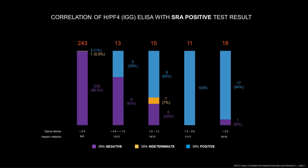Here is shown the correlation of the Mayo Clinic serotonin release assay with optical density of the heparin platelet factor IV IgG ELISA assay. The large majority of patients with a high optical density above 1.5 had a positive serotonin release assay test result. On the other hand, the large majority of patients with a negative heparin platelet factor IV ELISA had a negative serotonin assay test result. In our experience, there was a variable degree of positivity of the SRA depending on the optical density between 0.4 to 1.5 of the heparin platelet factor IV ELISA.